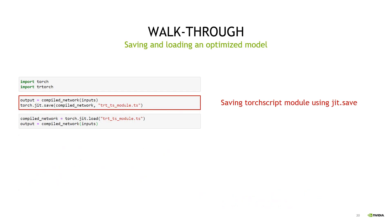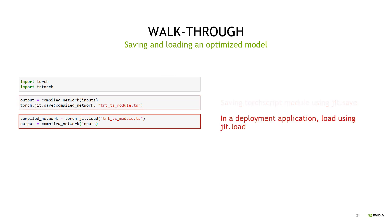To save a TRTorch optimized model for later use or for moving it to other platforms, saving is as simple as using torch.jit.save. Loading is equally simple — you can use torch.jit.load in your deployment application and you're good to go.